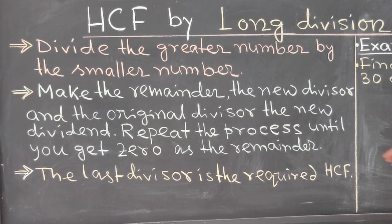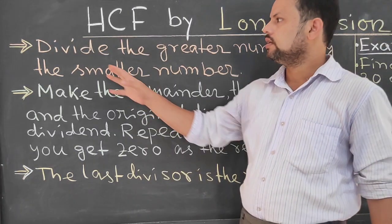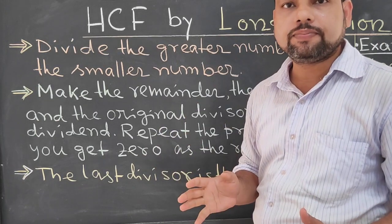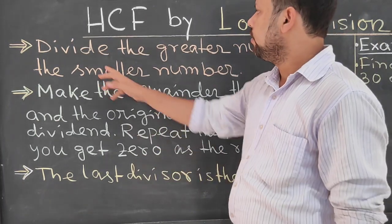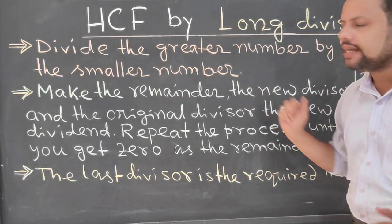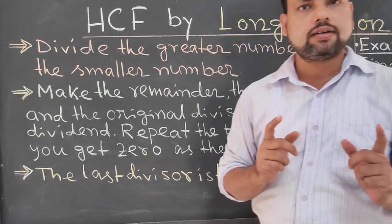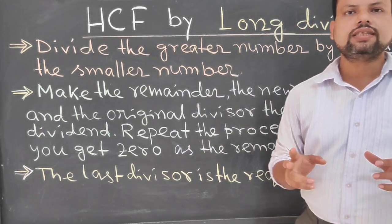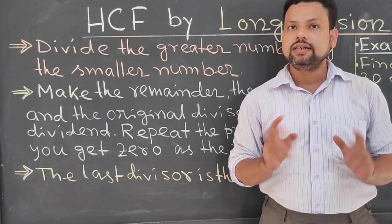If two numbers are there, then how to find HCF by long division? First one, we have to divide the greater number by smaller number. So first step, we have to divide the greater number with smaller number.